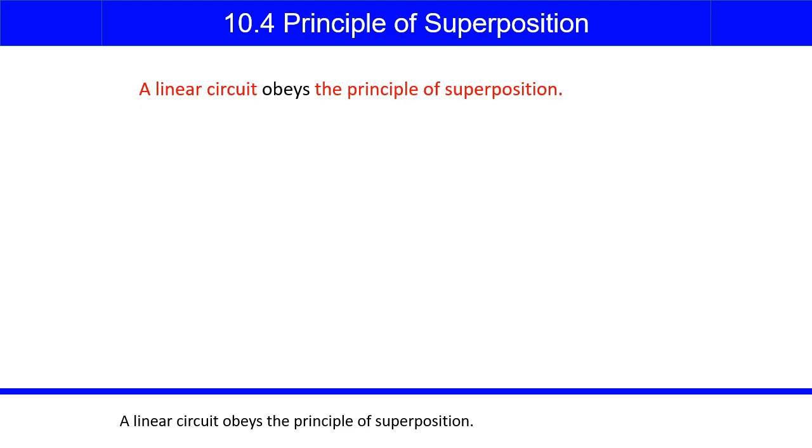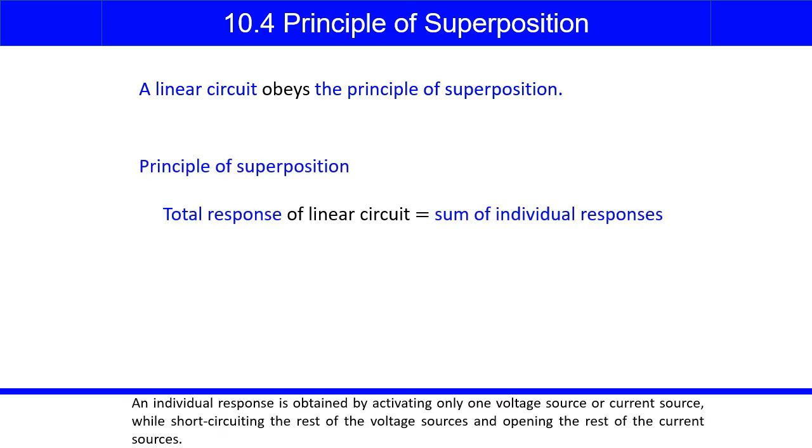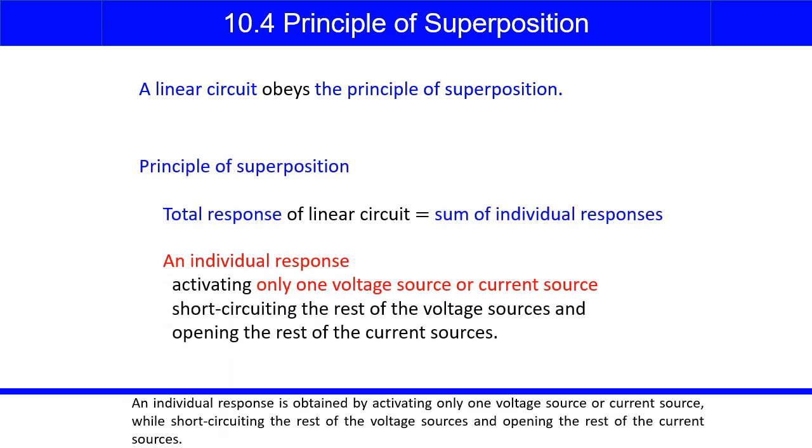A linear circuit obeys the principle of superposition. The principle states that the total response of a linear circuit equals the sum of the individual responses. An individual response is obtained by activating only one voltage source or current source, while short-circuiting the rest of the voltage sources and opening the rest of the current sources.